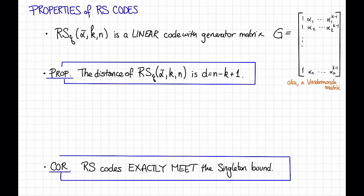We've essentially seen why this is the generator matrix in a previous video. If you multiply this matrix by some vector A, you're essentially evaluating the polynomial whose coefficients are A at these points α₁ through αₙ.